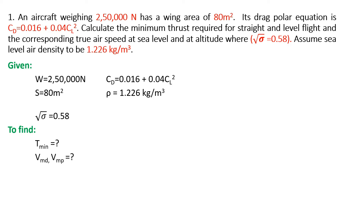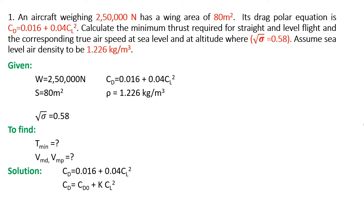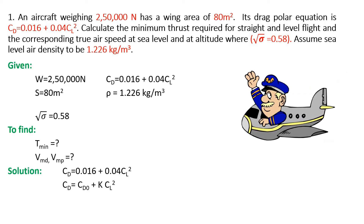The drag polar equation is CD equals CD naught plus K·CL square. Comparing it with the given equation, CD naught is 0.016 and the value of K is 0.04.